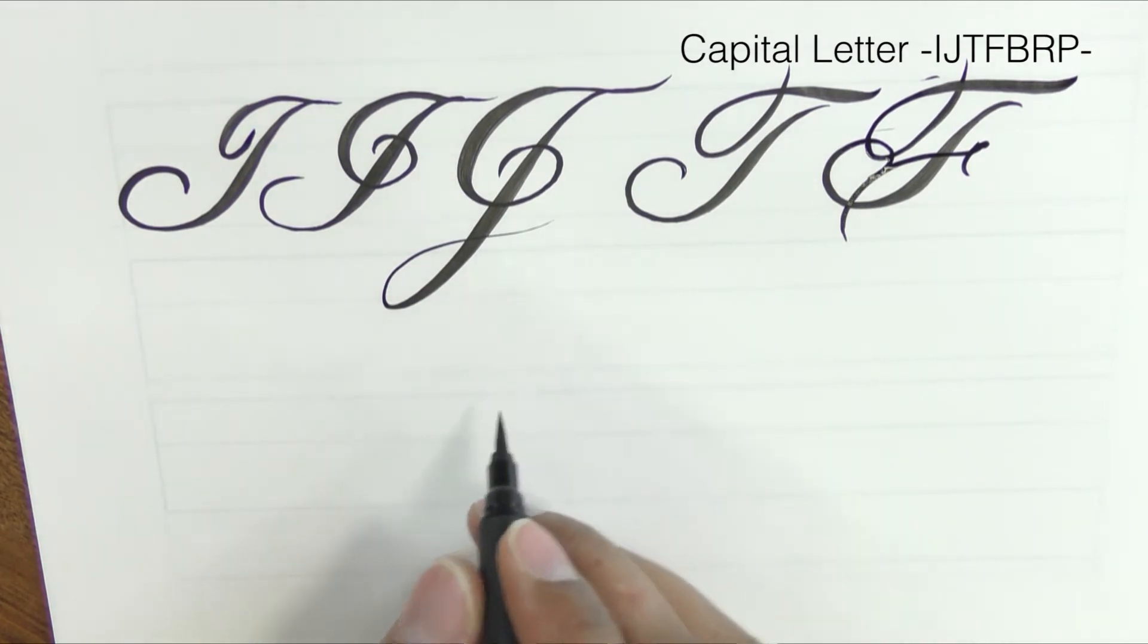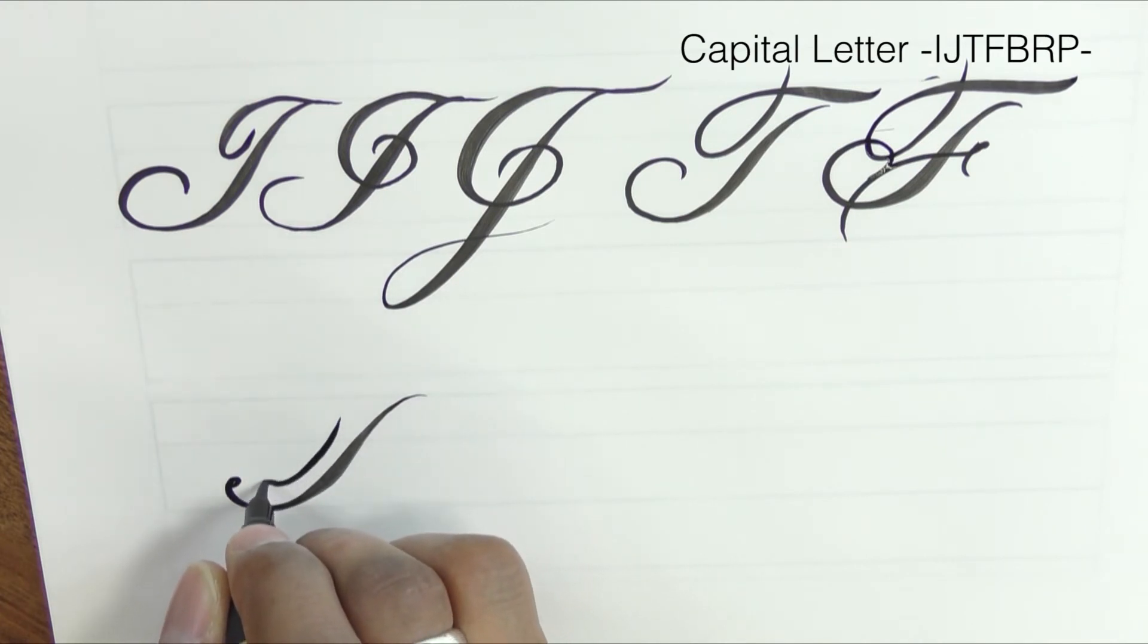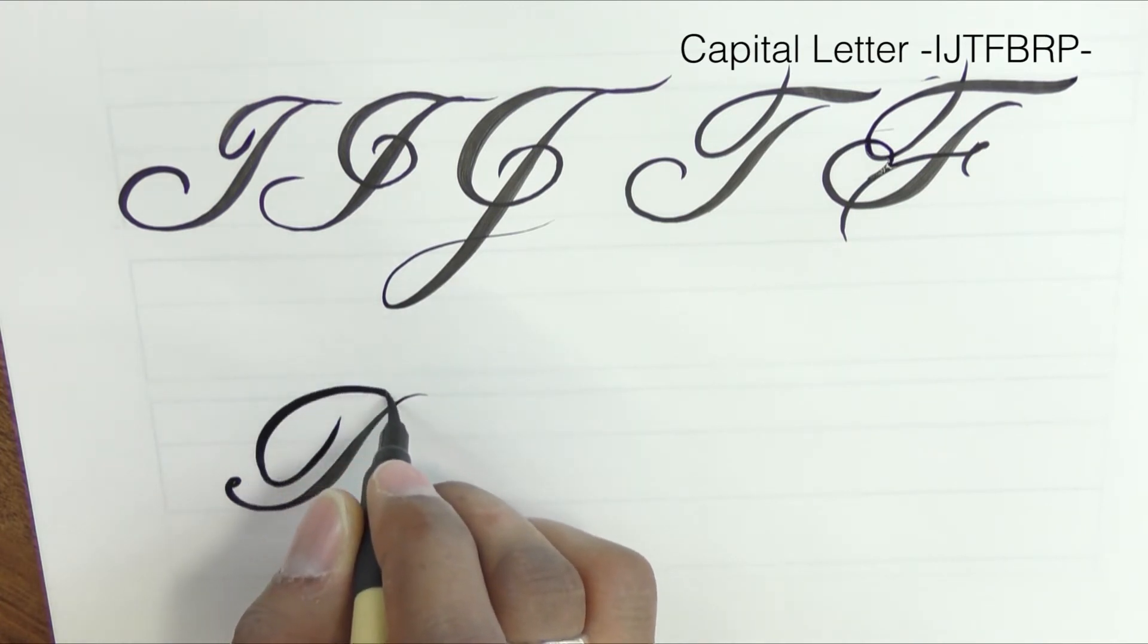Next we have B, R and P. Line of universal beauty. Make this ellipse fairly deep. Lift.